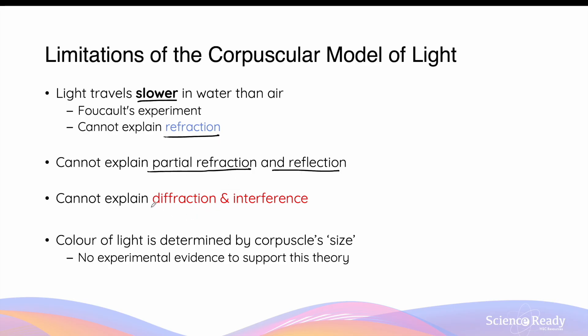Furthermore, the model cannot explain diffraction and interference, which are two unique properties of light. And finally, the theory of different colours of light corpuscles, although it can be used to explain the phenomenon of dispersion, is not supported by any experimental evidence, which further questions whether Newton's model of light is valid.